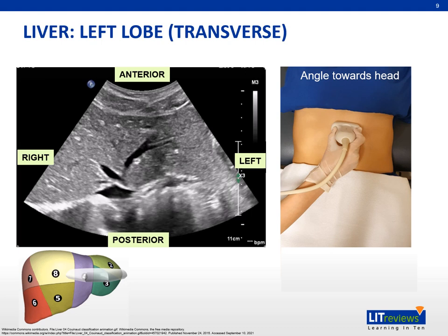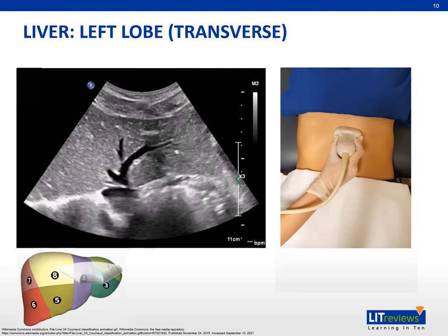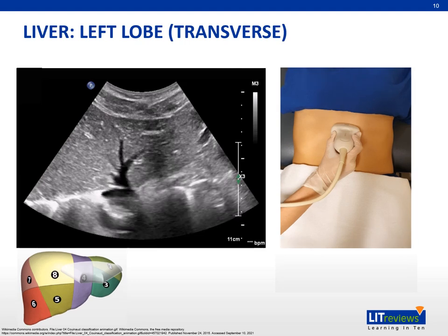In this plane, we can see the left hepatic vein and middle hepatic vein draining into the IVC. The left hepatic vein separates segment 2 from segment 4a, while the middle hepatic vein separates the entire left lobe from the right lobe — more specifically, it delineates segment 4a from segment 8. Angle the transducer cranially to ensure full coverage.